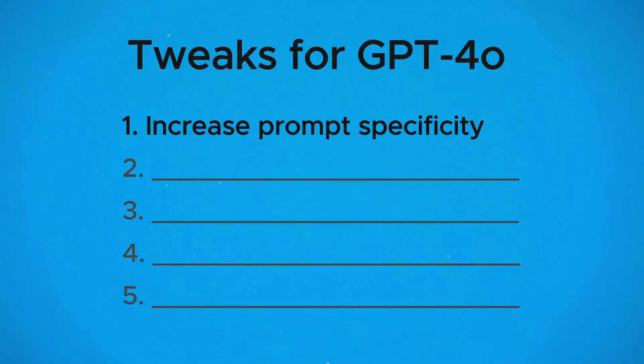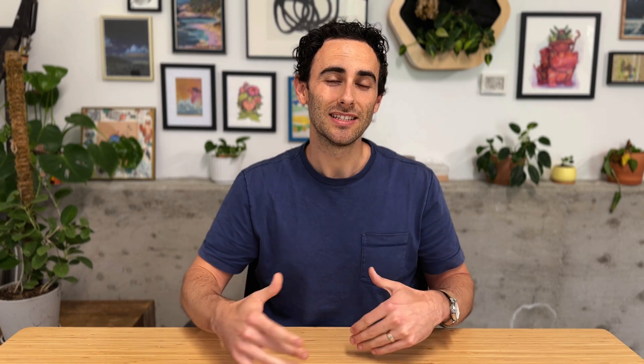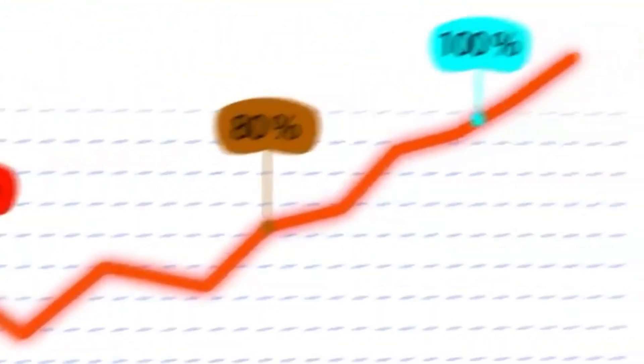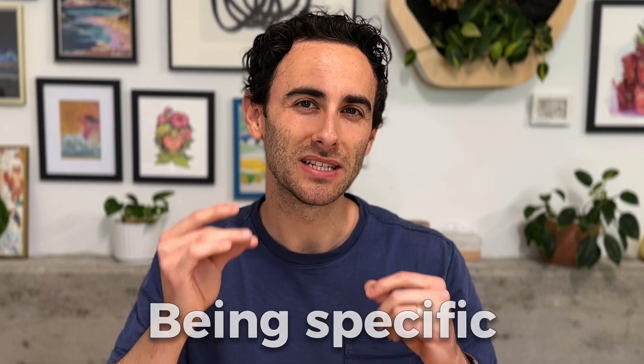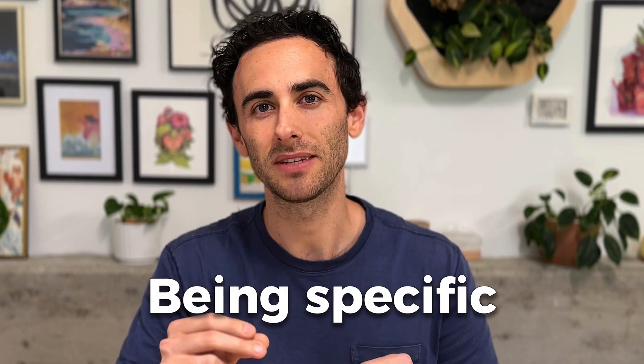The first tweak you need to make is to increase your prompt specificity. GPT-4.0 is a massive improvement in instruction following. This allows us to be a lot more specific in our prompts and provide more context. Being specific is the most important part of prompting, and GPT-4.0 allows us to be a lot more specific.